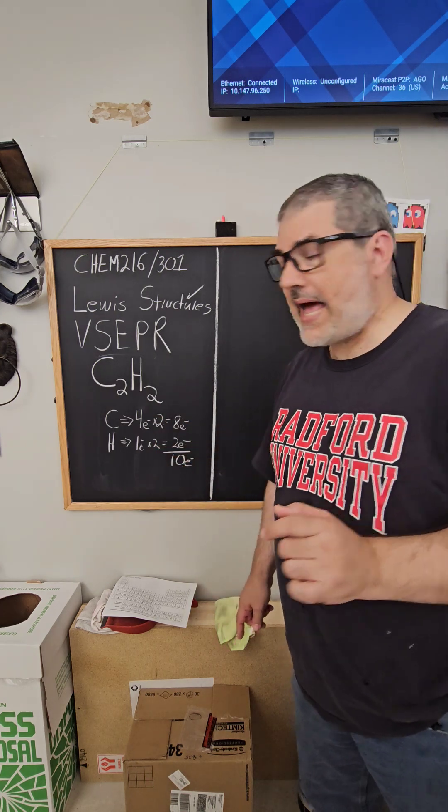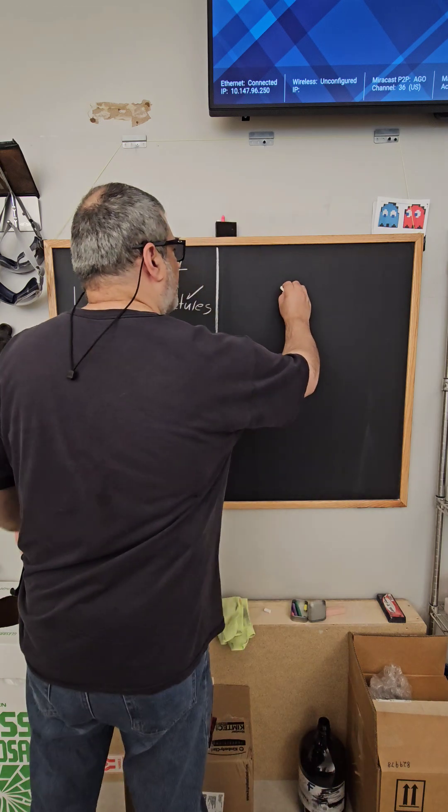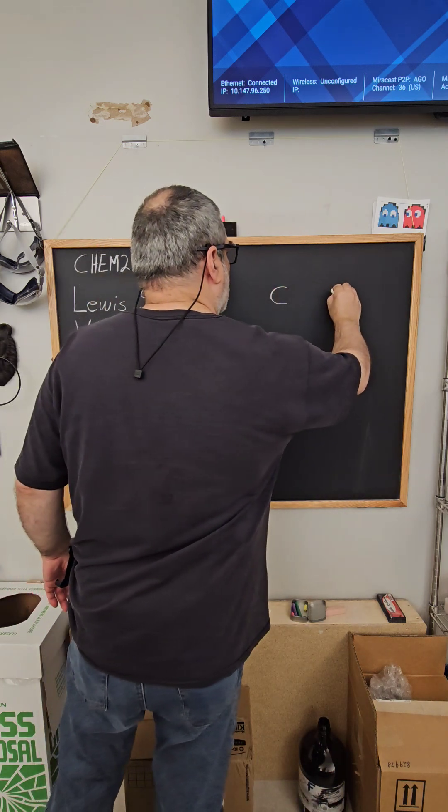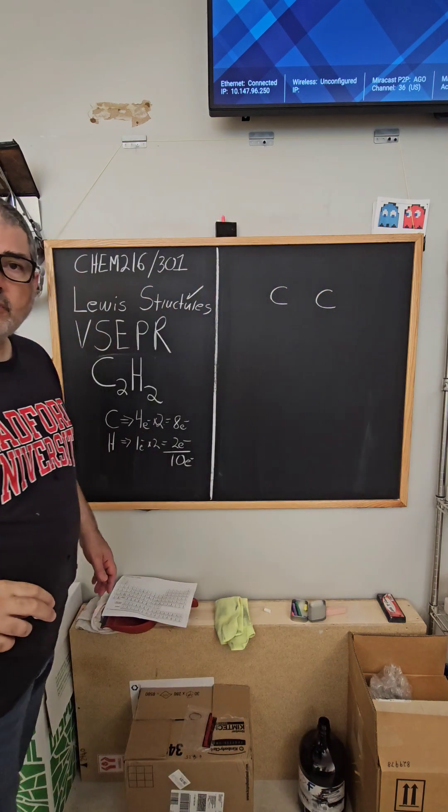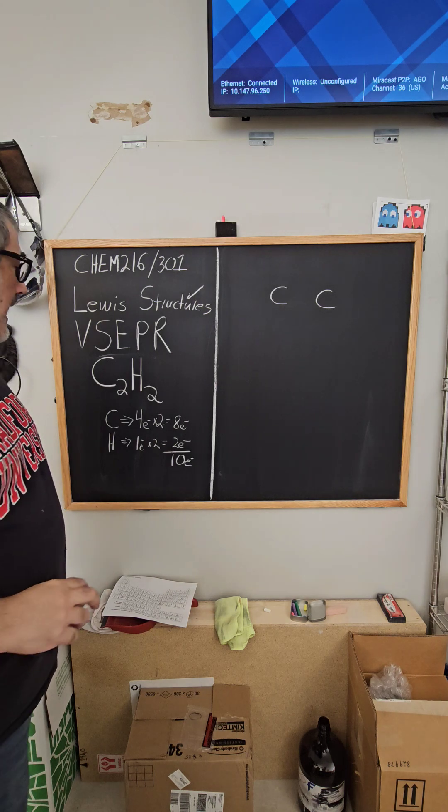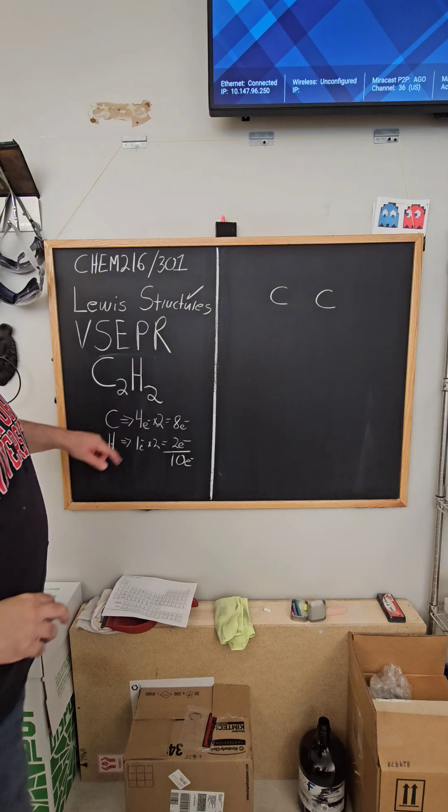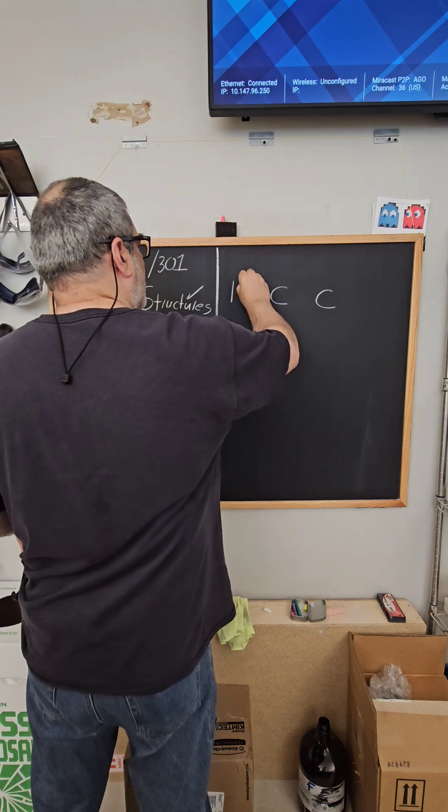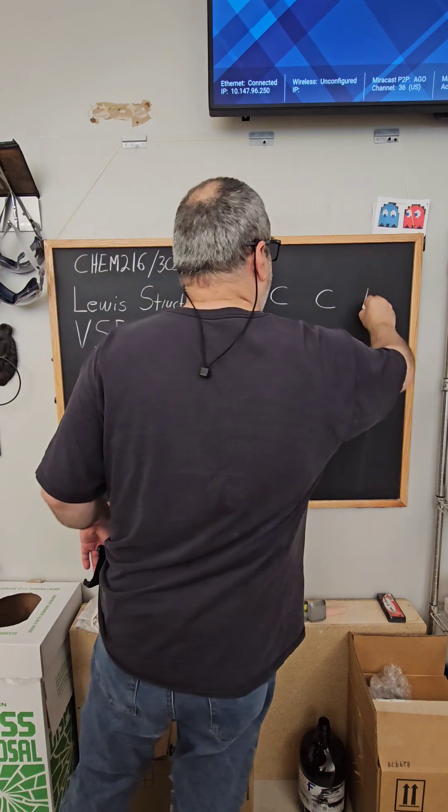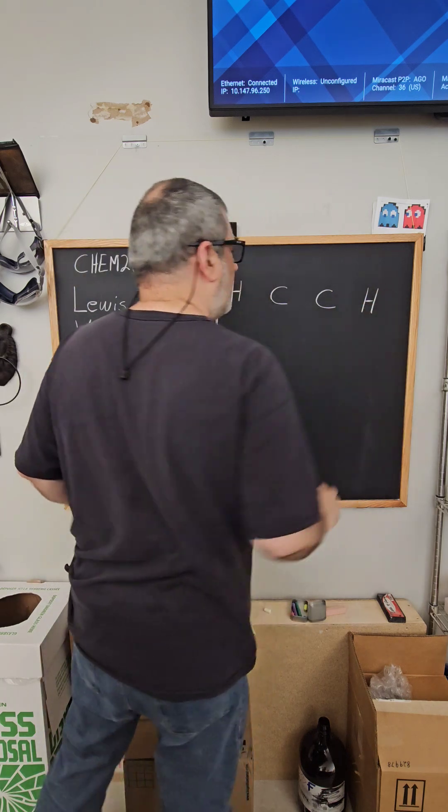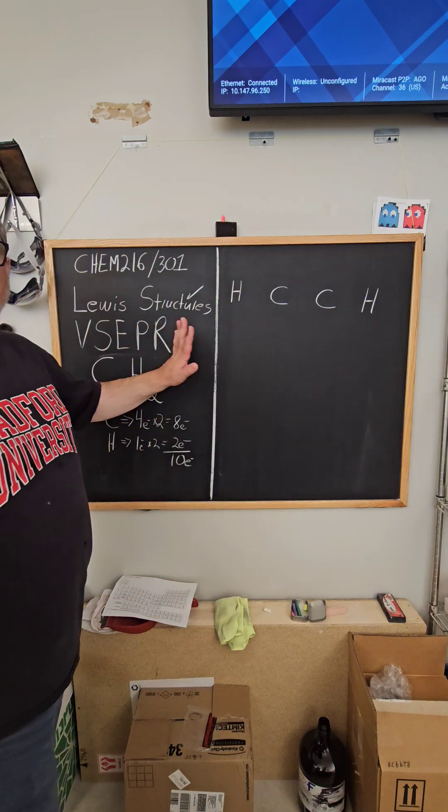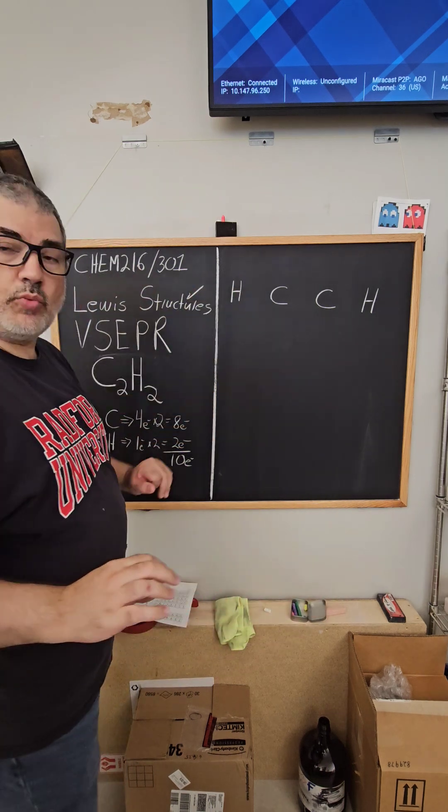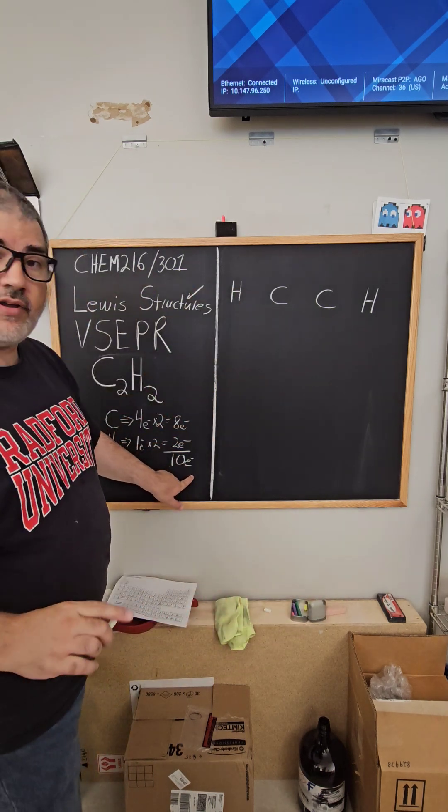Hydrogen can never be the central atom. So our structure, we're going to have two carbons and we've got two hydrogens. So it makes sense that one hydrogen goes to one carbon. At this point, I've just drawn a framework. Could be wrong, but we'll just go with that.